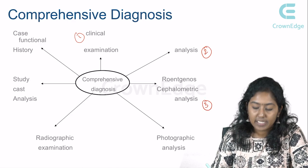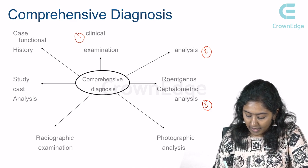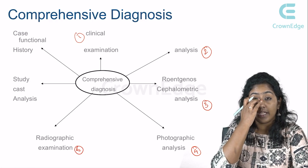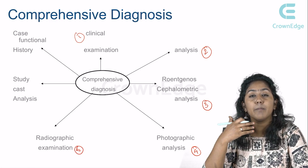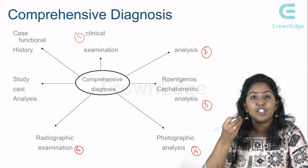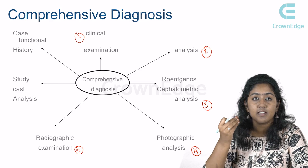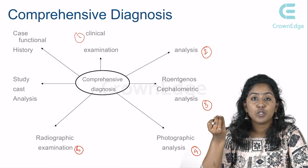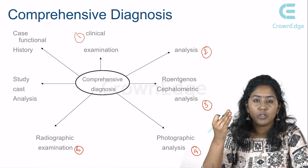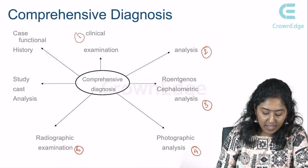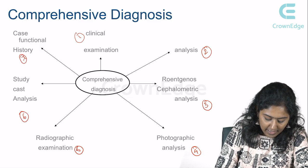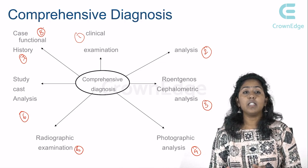The eight diagnostic aids are: case examination, analysis of the case, cephalometric analysis (an essential aid), photographic analysis, radiographic analysis (e.g., OPG for impacted or congenitally absent teeth — to determine location of a tooth), study cast analysis, history, and case functional examination. In radiographic examination you check for malpositioned, impacted teeth and their locations.